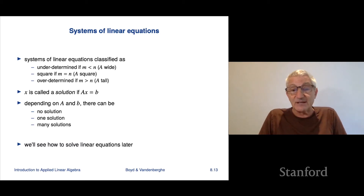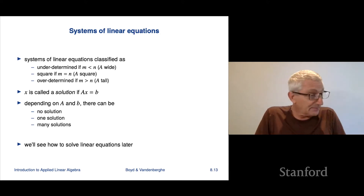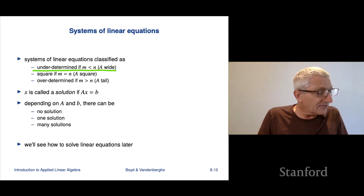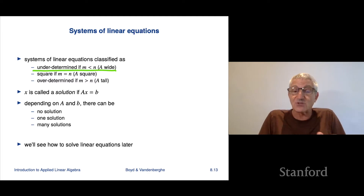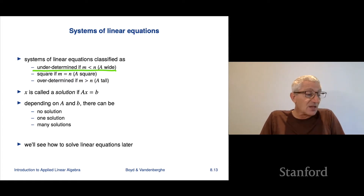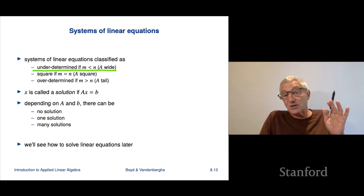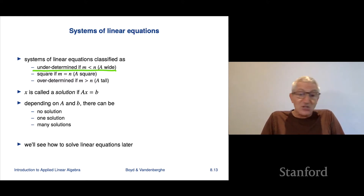We classify sets of linear equations depending on the dimensions of A. It's called underdetermined if m is less than n — that means the coefficient matrix is wide, with more columns than rows. Remember that the columns of the coefficient matrix are associated with the variables (the xi's), and the rows are associated with the individual scalar equations. Underdetermined means, roughly speaking, there are fewer equations than there are variables.